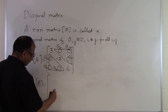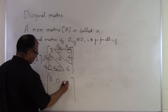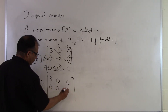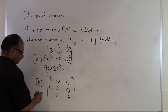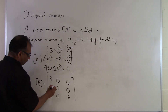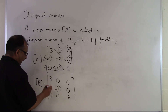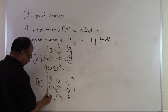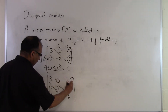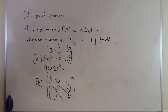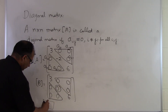Let's take another example. If I have a similar matrix with 3, 0, and 6 on the diagonal and all off-diagonal elements zero, this is also a diagonal matrix — in spite of the second row, second column element being zero. The diagonal matrix condition depends only on these off-diagonal elements: the ones where the column numbers are not the same as the row numbers. And that's the end of this segment.